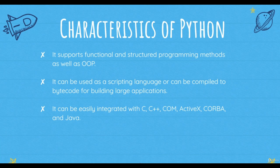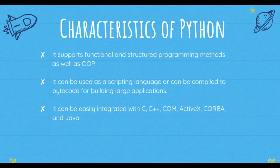Python is also extensible — if needed, you can write some of your Python code in other languages like C++, which makes Python an extensible language that can be extended to other languages. It is also embeddable: you can put your Python code into source code in a different language like C++, which allows us to integrate scripting capabilities into a program of the other language.